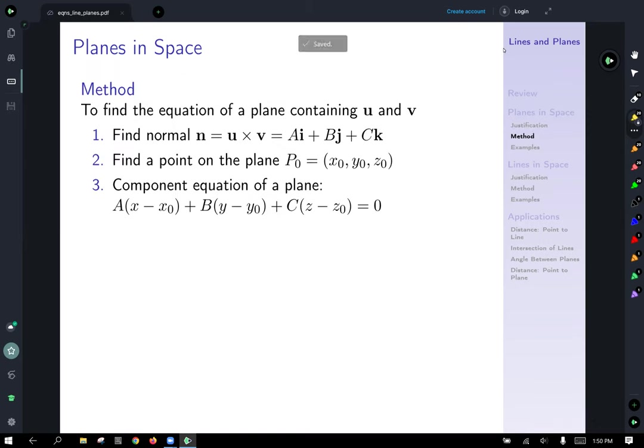So here's a nice concrete method you can follow. To find the equation of a plane containing u and v, you find the normal. So the normal is given by u cross v, and that normal is going to always be written as ai plus bj plus ck once you've done the math of the cross product. The x component is capital A, the y component is capital B, the z component is capital C. Find a point on the plane, p0 is equal to x0, y0, z0. Well, if u and v are on the plane, you probably know a point on the plane, so you may as well just use that one. And then you just whack it into the component equation of the plane, and you've got yourself the solution.